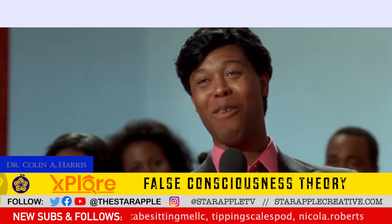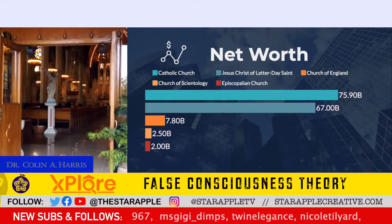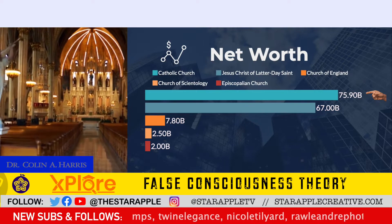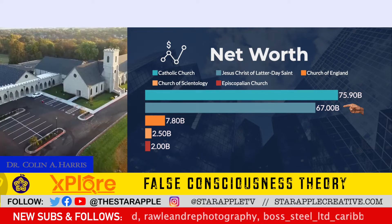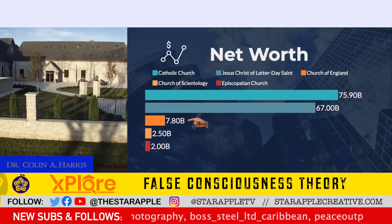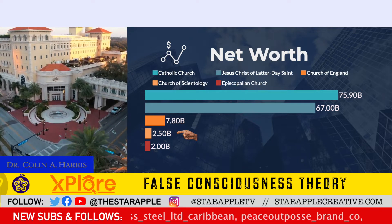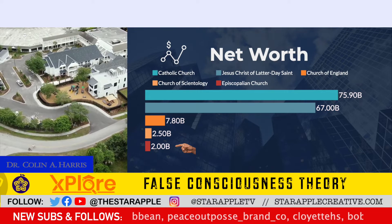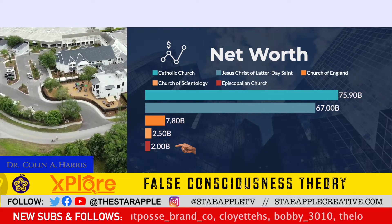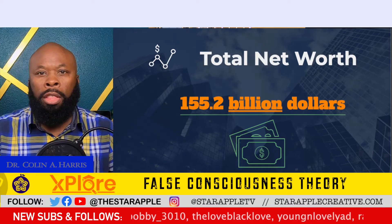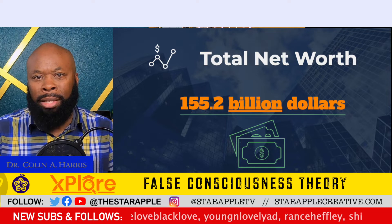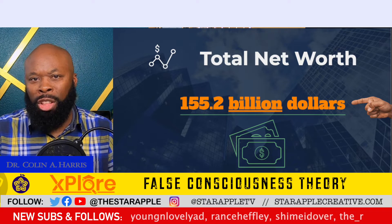Monetary contributions to religious institutions is a form of wealth distribution from the working class to the ruling class, either direct or indirect. This is evident in the financial standing of some of the world's largest churches. The Catholic Church has an estimated global wealth of $75.9 billion. The Church of Jesus Christ of Latter-day Saints has an estimated net worth of $67 billion. The Church of England is worth approximately $7.8 billion. The Church of Scientology is worth approximately $2.5 billion. The Episcopalian Church is estimated to be worth $2 billion. The total estimated net worth of these five institutions is approximately $155.2 billion.